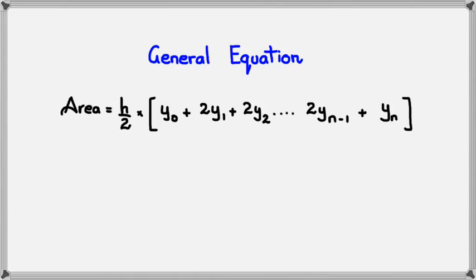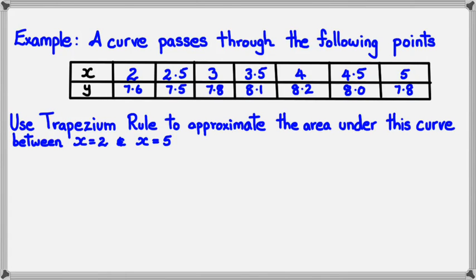I've got a couple of examples. Here's an example of a question: A curve passes through the following points. Use trapezium rule to approximate the area under this curve between x equals 2 and x equals 5. We're not given the equation, just some points, and we're going to use the trapezium rule to figure out the area under this curve.